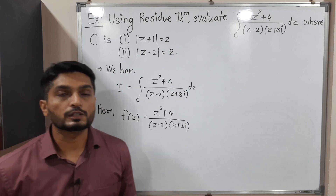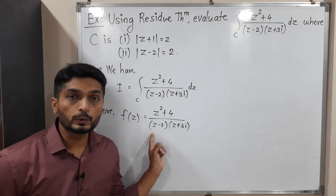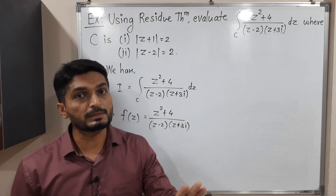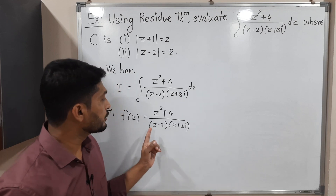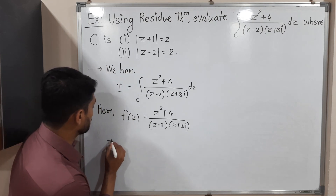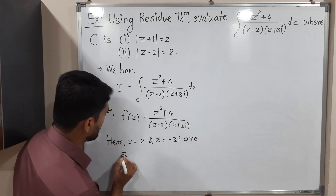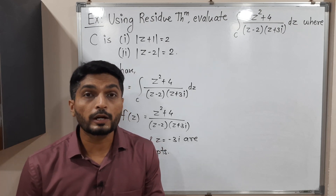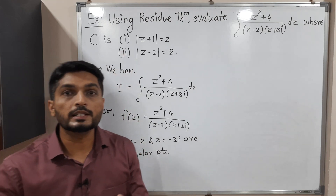We have to find the singular points of this function. In simple language, singular points means a point where the denominator is zero. If we put z = 2, that bracket becomes zero, so the denominator is zero. For z = −3i, again the bracket becomes zero, so the denominator is zero. So two points are creating complications: z = 2 and z = −3i. Since for both points the denominator is zero, these are our singular points. After that we need to check whether those points lie inside or outside the given curve. They have given two different curves — we will discuss both one by one.